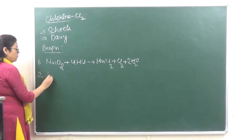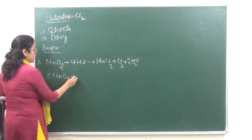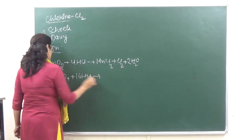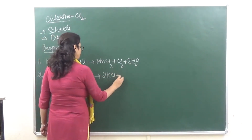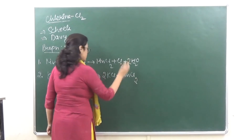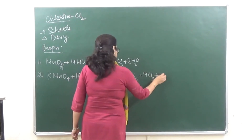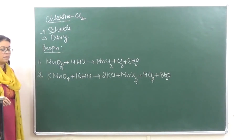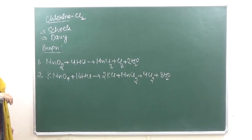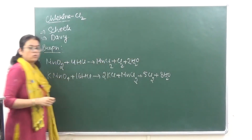When pyrolusite is heated with HCl, a greenish-yellow gas is produced, and that greenish-yellow gas is Chlorine. Also, if we take potassium permanganate, that is KMnO4, and react it with HCl, it gives us KCl plus MnCl2 plus Cl2 plus 8H2O. Let's check if it is balanced: 10 and 10, 5 by 5.